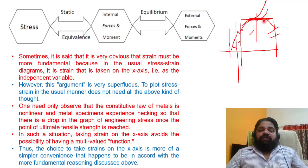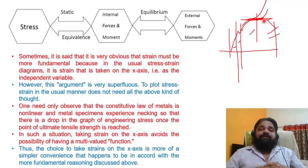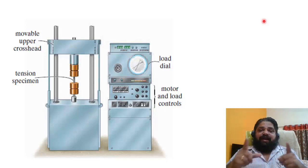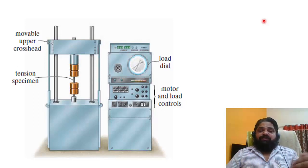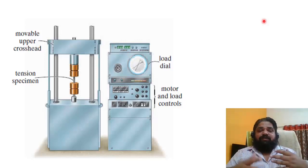Thus the choice of taking strain on the x-axis is more of a simpler convenience, and that happens to be in accord with the more fundamental reasoning discussed above. Now before coming to strain hardening, I want to show some examples because many students have not done any material testing yet and do not know how the UTM machine looks.